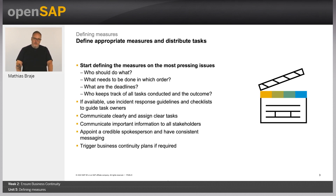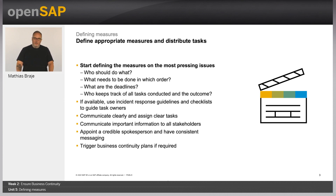Therefore, it is so important for the crisis management team to really define a measure in very detail, to really make sure that the crisis management team gets what it wants. When we look at a measure and the elements that need to be defined, it is very important that it is clear who should do it, what needs to be done, in which order activities need to be executed, what are the deadlines, and until when the crisis management team expects reporting of completion back. In a crisis like a pandemic, where you likely have 50 measures running in parallel, you need to ensure you track all open items and get reporting back on the outcome and completion of tasks.